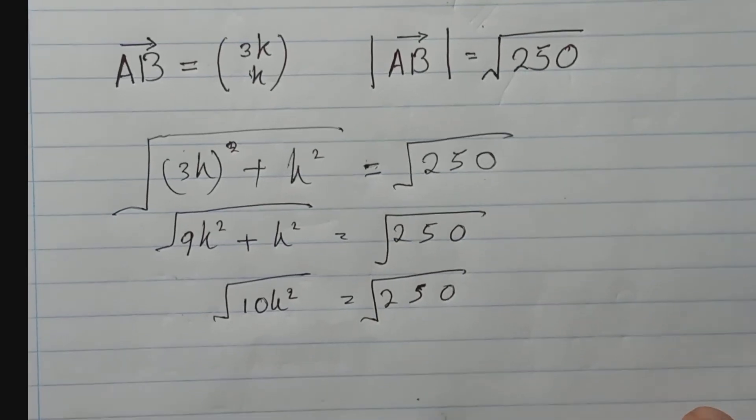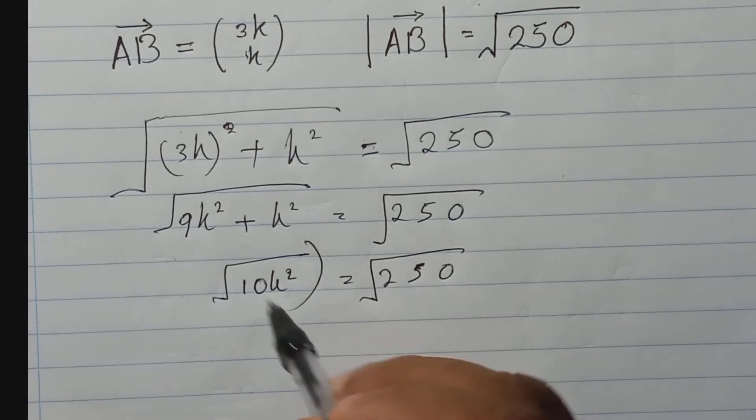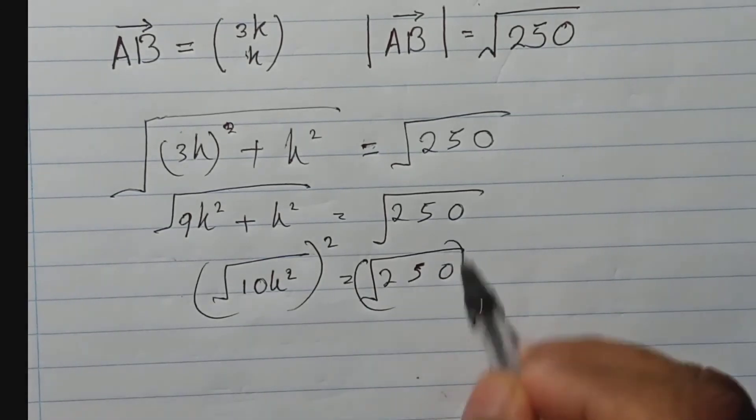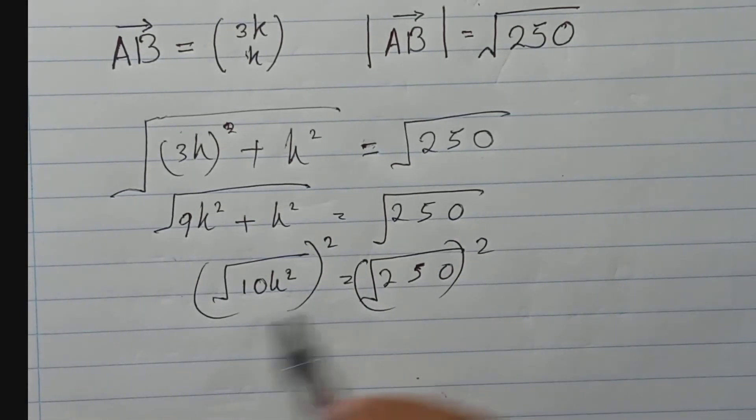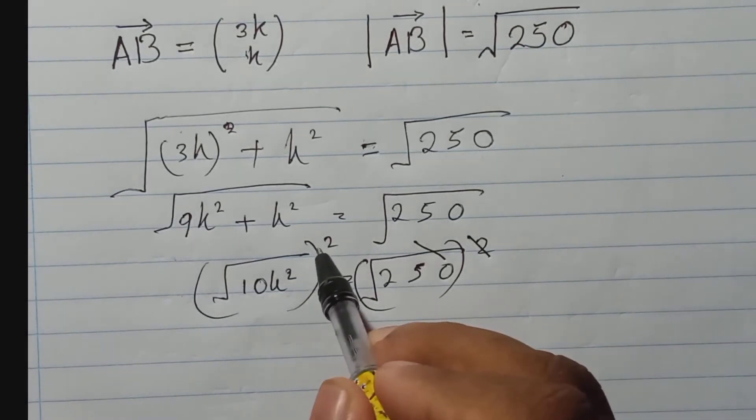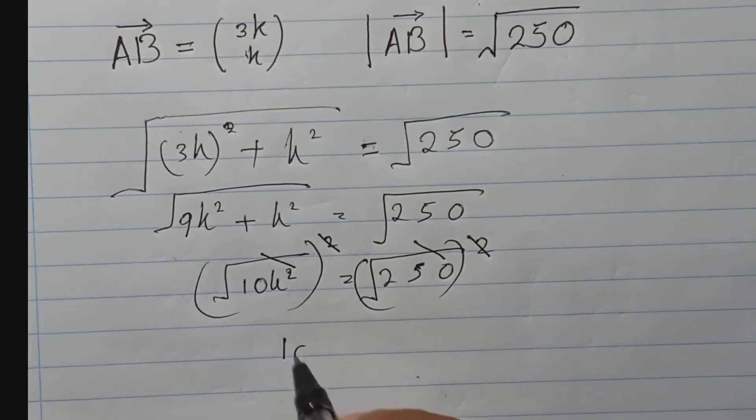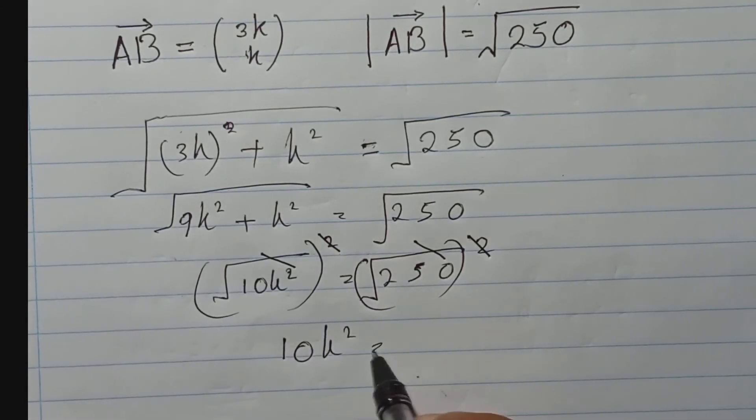You don't need to write this step, you can do it quickly. Now to remove this square root you need to put square here and here also square, you can put both sides square. Then this square root to this square cancel and here also this square root to square cut. Then here you will get 10k square, here you will get 250.